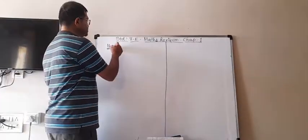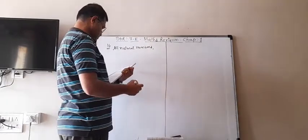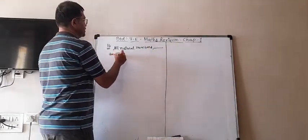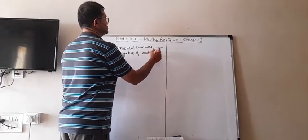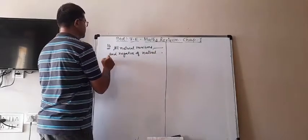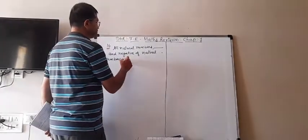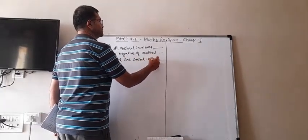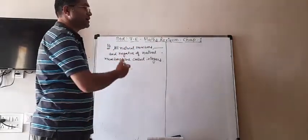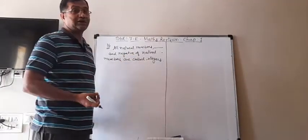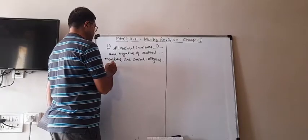All the natural numbers, zero, and negative of natural numbers are called integers. The natural numbers are 1, 2, 3, 4 up to infinity; negative of them is -1, -2, -3, and whatever is remaining in the middle — that is zero. So all natural numbers, zero, and negative of natural numbers are called integers.